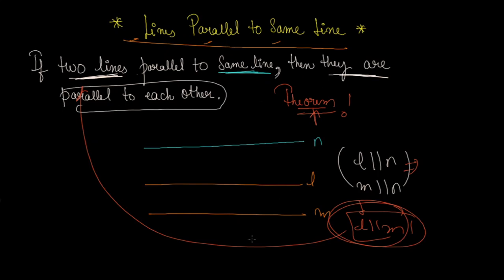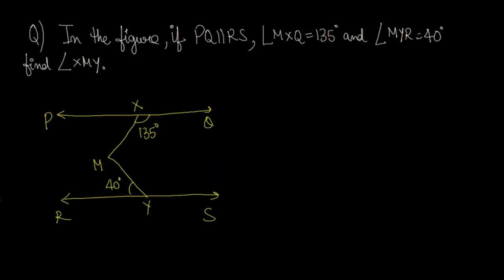This is the theorem. Now let's see some questions. In the figure, PQ is parallel to RS. These two lines are parallel. Angle MXQ is 135 degrees and angle MYR is 40 degrees. What do we find? We find angle XMY.